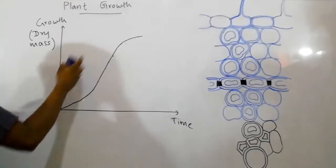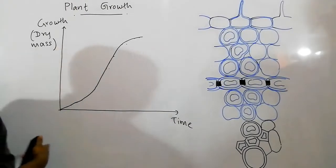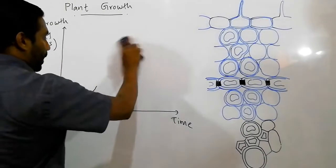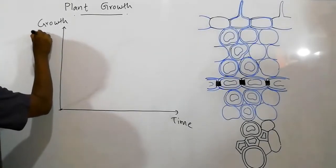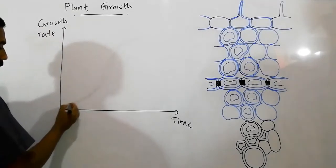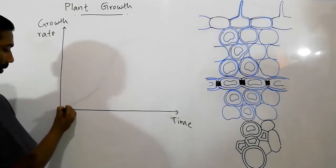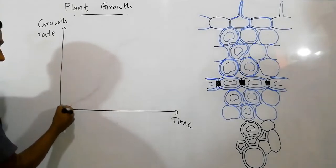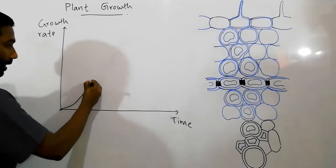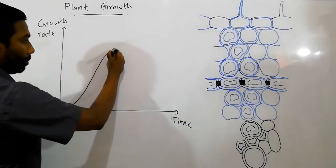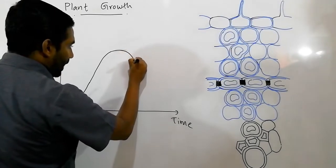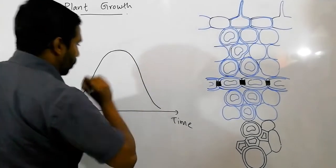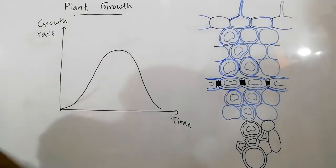The slope of the growth graph indicates the growth rate. Now plotting growth rate versus time: at the beginning of the lifespan, growth rate is comparatively low. Growth rate gradually increases, then at a particular period of the lifespan, growth rate becomes maximum — rapid growth occurs at this period. After that, growth rate decreases. This is how we represent growth rate versus time of the lifespan.